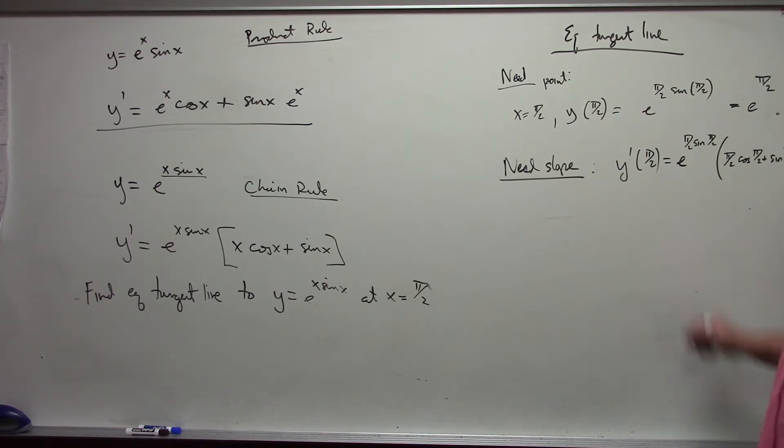But this then comes out to be, as we saw earlier, this is e to the pi over 2, and cosine of pi over 2 is 0. So this is 0, sine of pi over 2 we said is 1, and so my derivative is also e to the pi over 2.